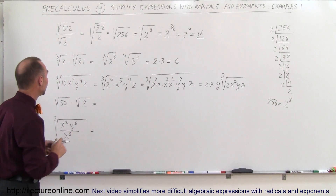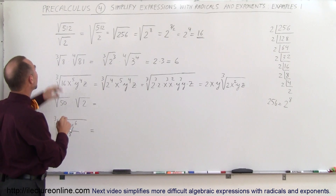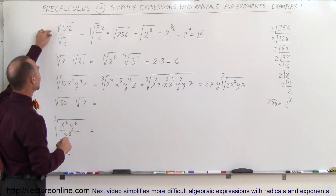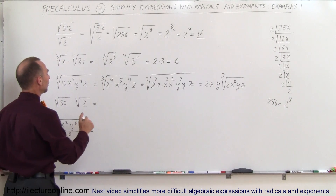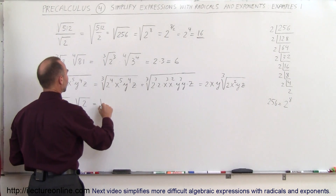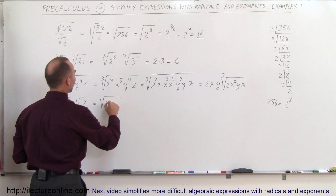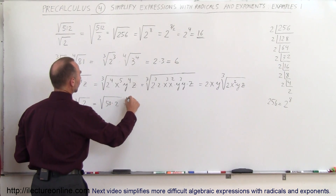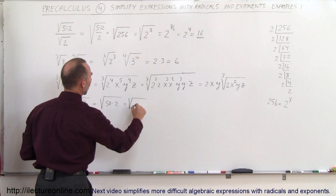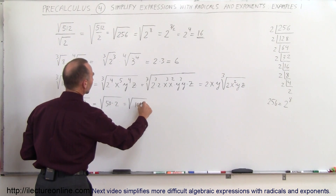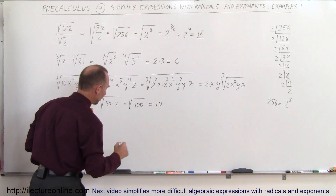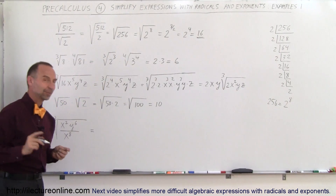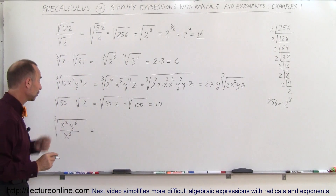Coming over here, just like what we did before, you can combine these two as well. This can be written as the square root of 50 times 2, which is equal to the square root of 100, which is equal to 10. That's an easy one, especially if you remember this rule.